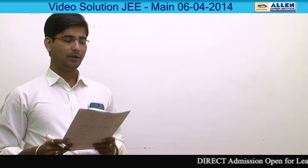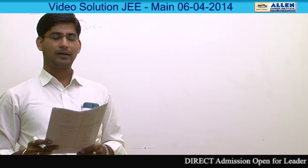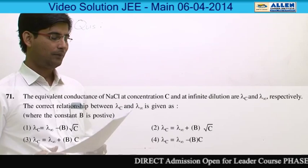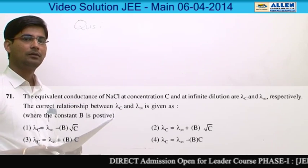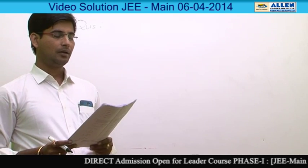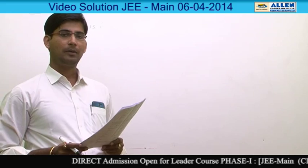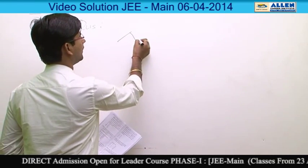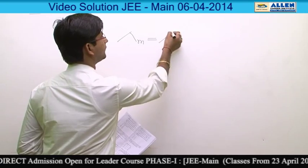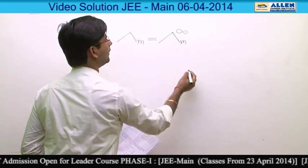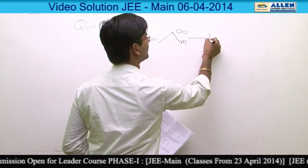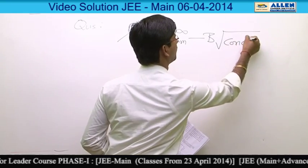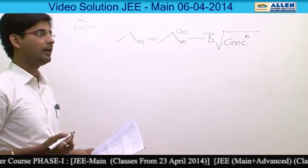In question number 71, they are asking for variation of molar conductance with the concentration of a strong electrolyte. According to Debye-Hückel theory, it varies according to the equation: lambda m is equal to lambda m infinite minus some constant into square root of concentration of that strong electrolyte.